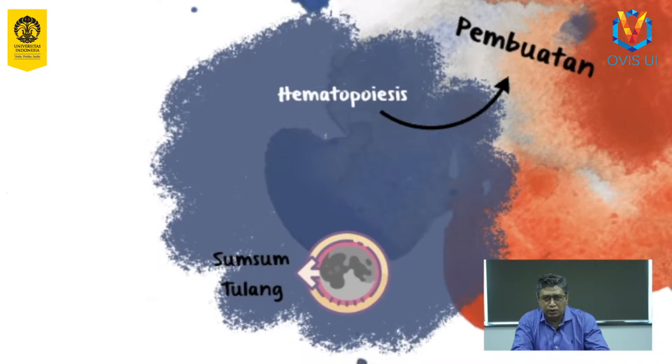Apa fungsi sumsum tulang ini? Ternyata sumsum tulang merupakan rumah dari sel-sel punca yang nantinya akan mengalami diferensiasi menjadi sel darah baru dan sel stroma di dalam tulang. Sel punca yang terdapat pada sumsum tulang berukuran cukup besar dan didukung oleh jaringan fibrosa yang disebut stroma. Ada 2 jenis sel punca pada sumsum tulang, yaitu sel yang bertanggung jawab dalam produksi sel darah merah, dan sel punca yang bertanggung jawab untuk keberlangsungan stroma.